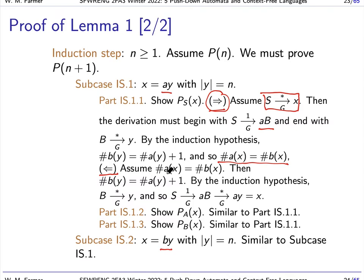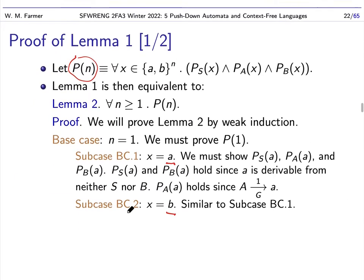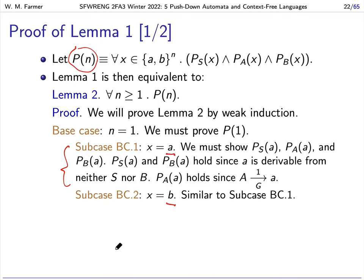For the other direction (B implies A), we assume the string has the same number of A's and B's. Then the number of B's in Y is one more than the number of A's in Y, so by the induction hypothesis we can derive Y from B. Therefore our derivation goes: S → AB → AY, and AY is X. The case when X begins with B is completely symmetric. That basically completes the proof of Lemma 1, with only two genuinely different arguments needed.